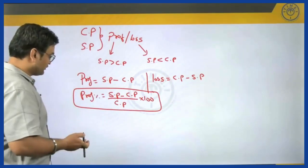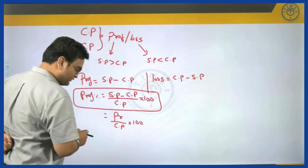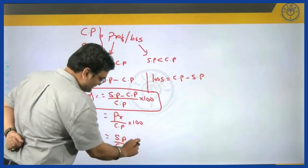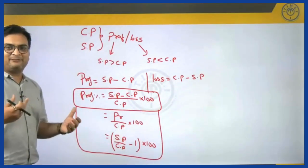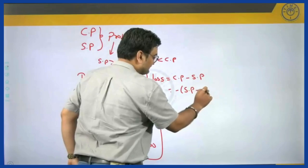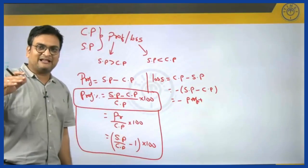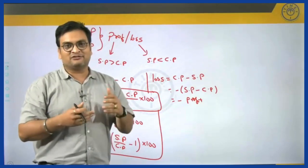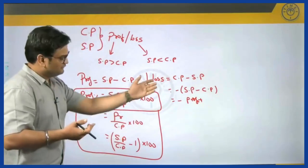This formula can be used in several other forms. The numerator is the profit value. We could also write it such that if you divide numerator by denominator, we get the ratio of selling price and cost price minus 1 into 100. Similarly, loss percentage follows the same formula with a minus sign — if your profit is minus 30 percent, that is the same as saying loss is 30 percent. So there is no need to specially discuss loss percentages separately.